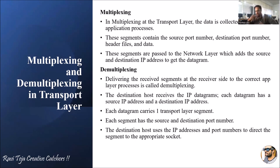Each datagram carries one transport layer segment, and each segment has a source port number as well as a destination port number. Based on the source and destination port numbers, we are able to transmit and receive messages correctly to the appropriate application. The destination host uses the IP addresses and port numbers to direct the segment or message to the appropriate sockets, where sockets are the gateway through which data is transmitted to the correct application.